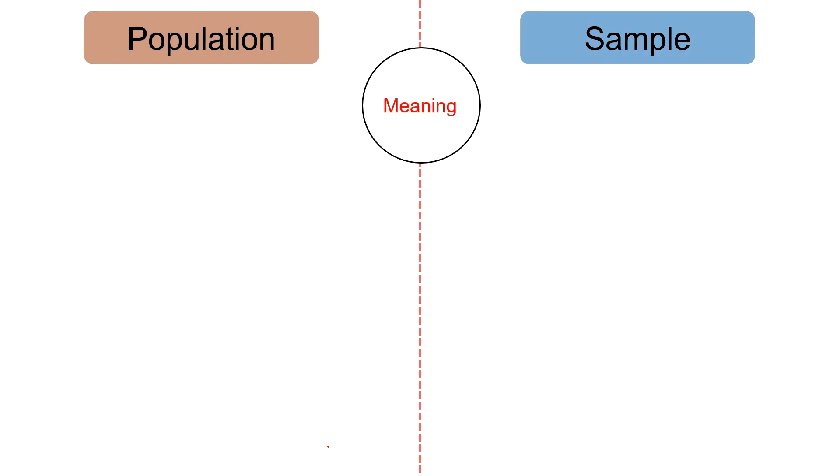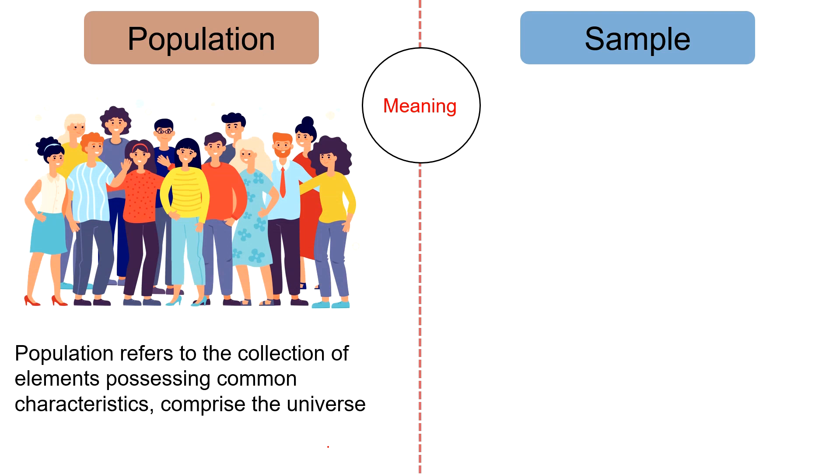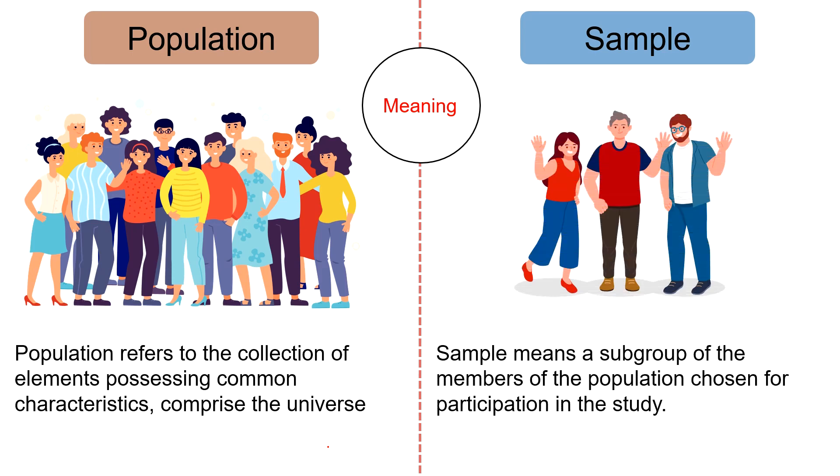Moving on to the difference between population and sample. Meaning, population refers to the collection of elements possessing common characteristics comprise the universe. On the contrary, sample means a subgroup of the members of population chosen for participation in the study.